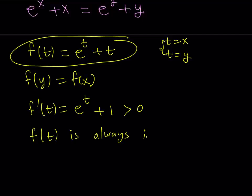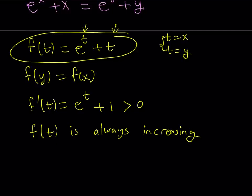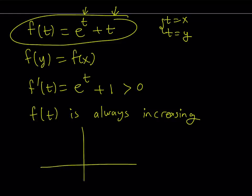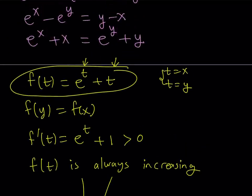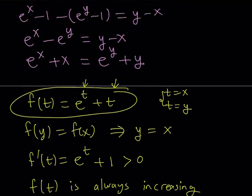Now this is important because we have a function that's always increasing. And f is also a continuous function because e to the power t is continuous, t is continuous, and their sum is also going to be continuous. So you're basically talking about a function that is always increasing, whatever that looks like. And it's continuous, so there are no holes or gaps or jumps or anything like that. And we're basically looking at the function at two different values and they're equal. So this implies f of y equals f of x implies y equals x. That's the conclusion we get from here.